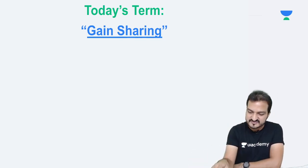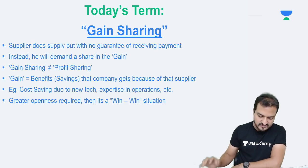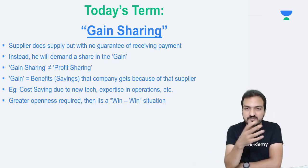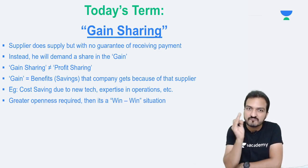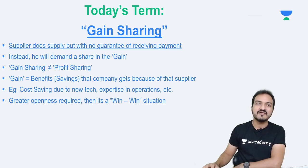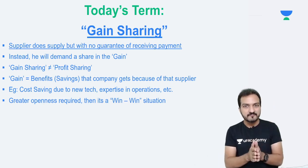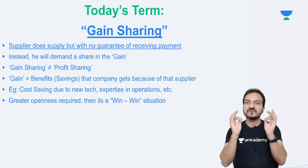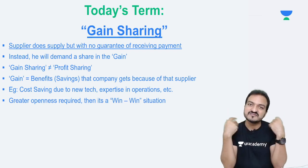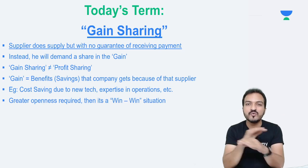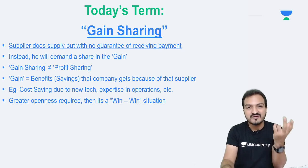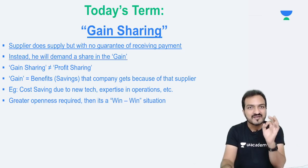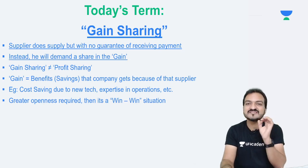Now what sort of gain is that? The gain sharing arrangement is basically an agreement between a business and his supplier — not necessarily a supplier of material; it might be a supplier of some services also. The supplier will agree to do the supply without any guarantee of receiving any payment. Instead of getting a fixed payment, he will demand a share in the gain — not a share in the profit. It is a share in the gain.